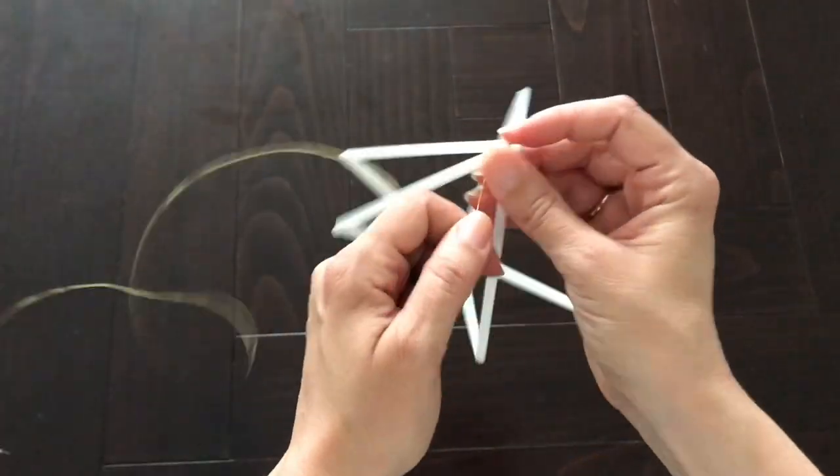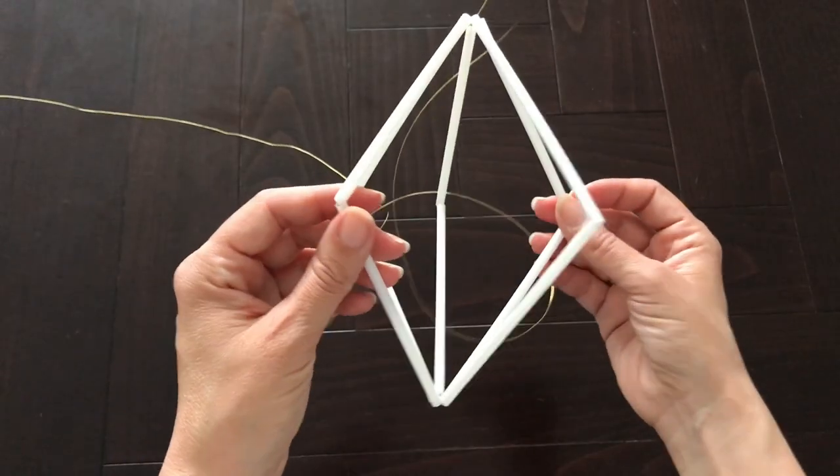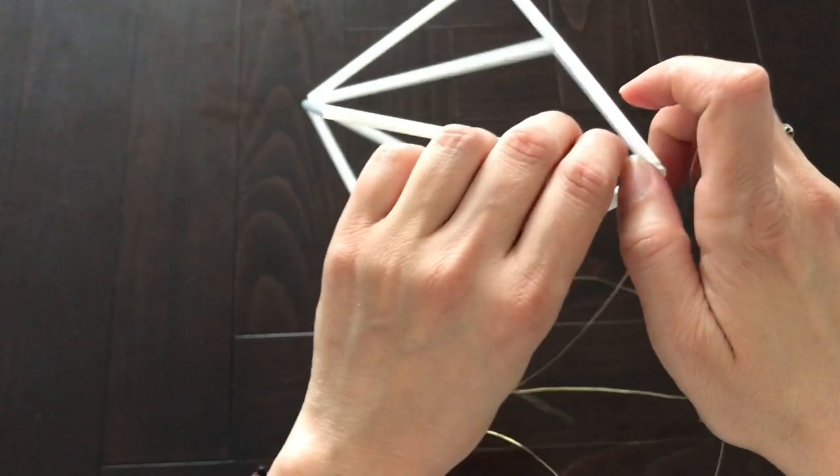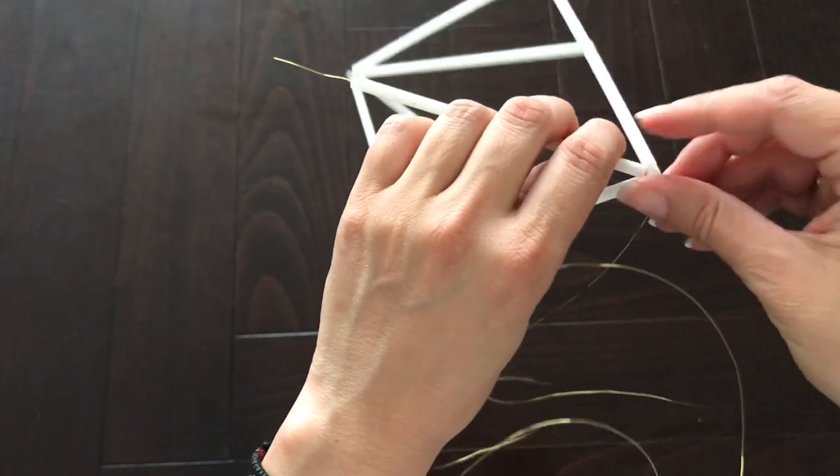Repeat those steps until you have five rows and you should end up with this shape. Then you want to feed your wire through one of the straws and bring it out to the end of that straw.